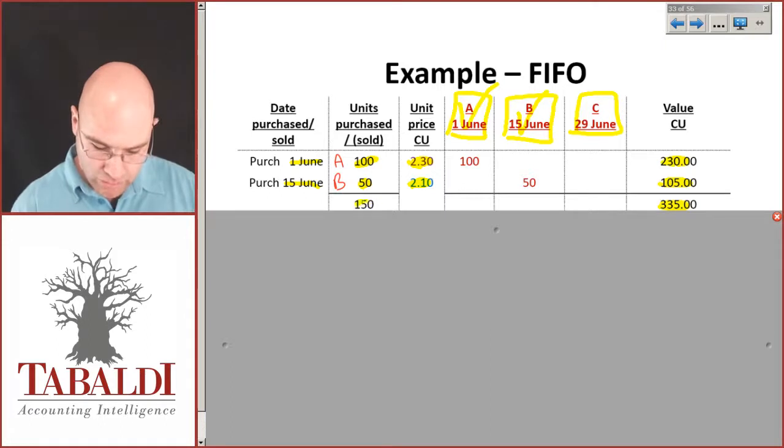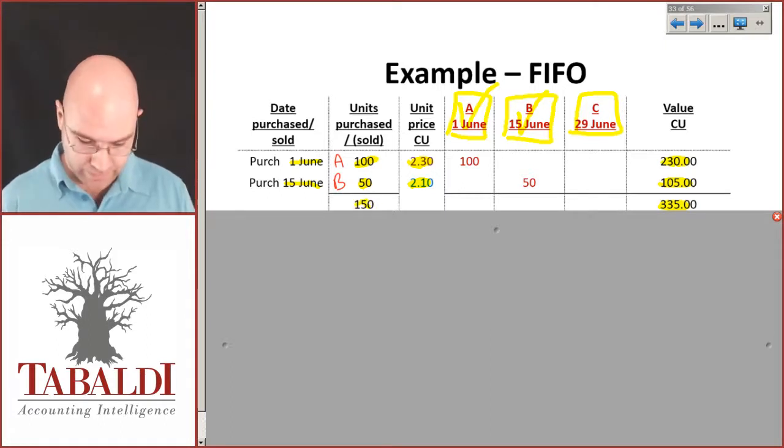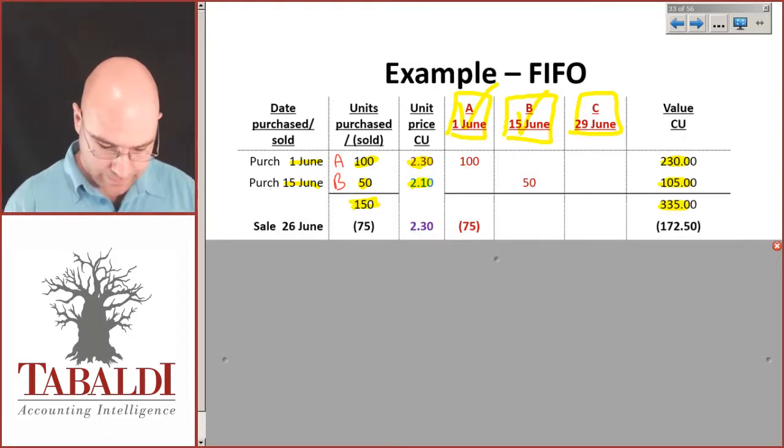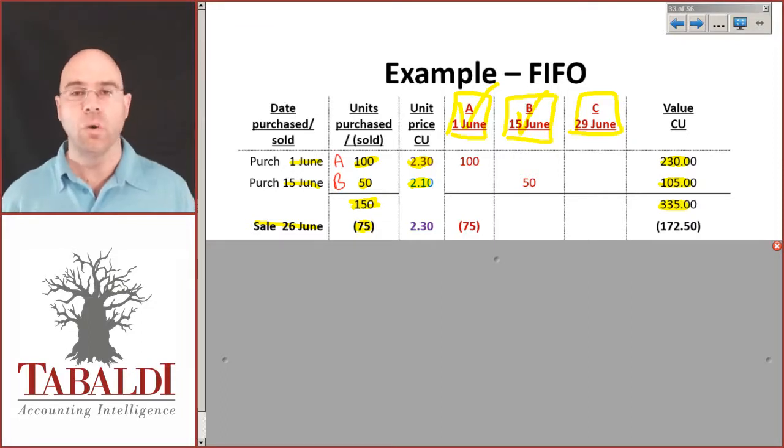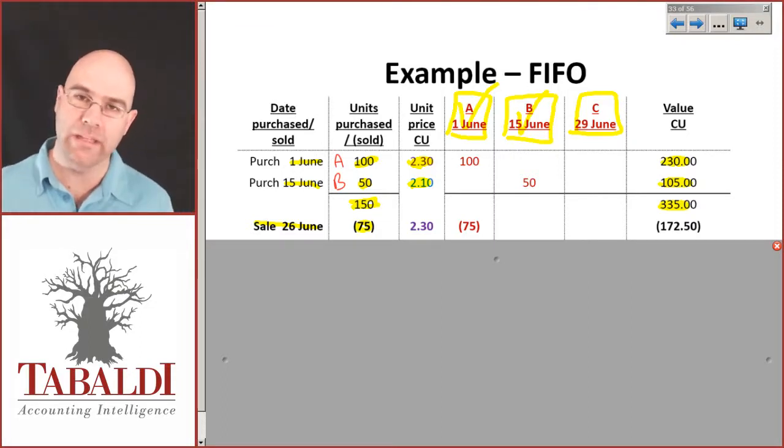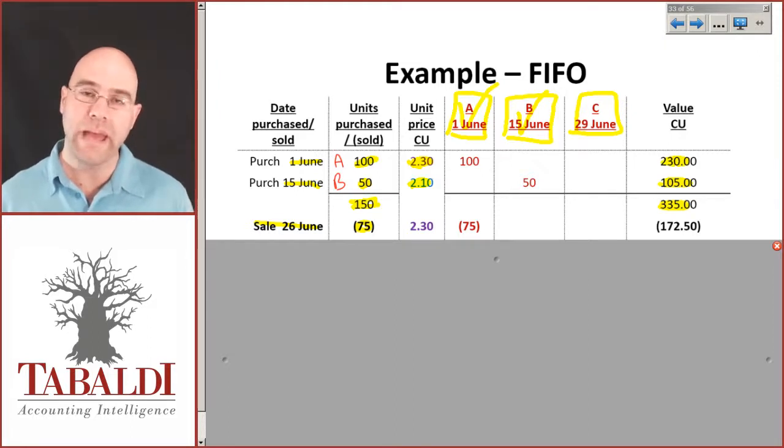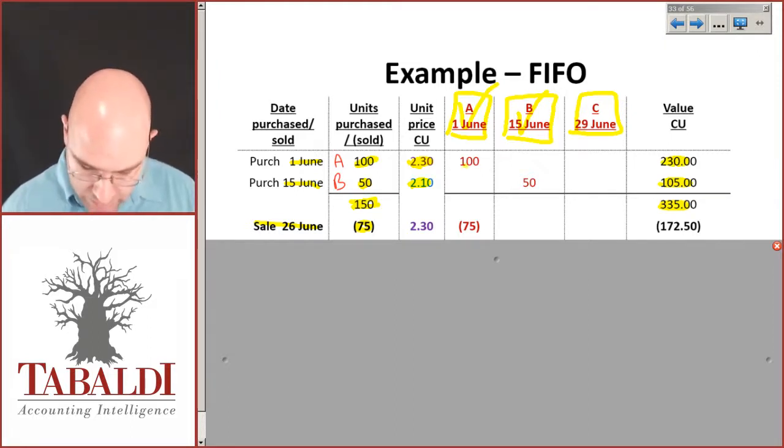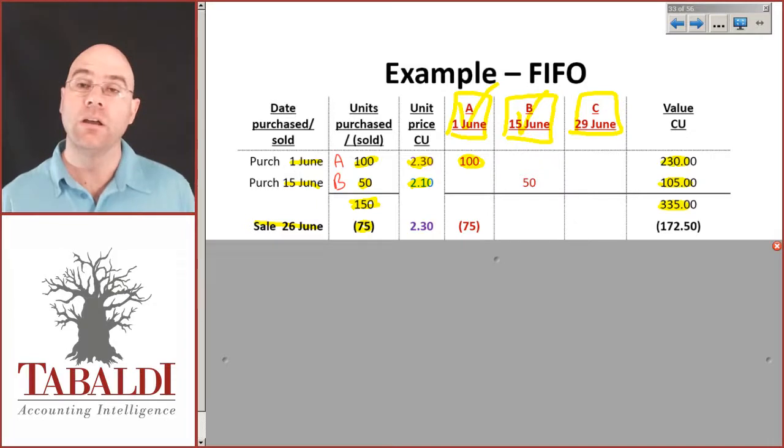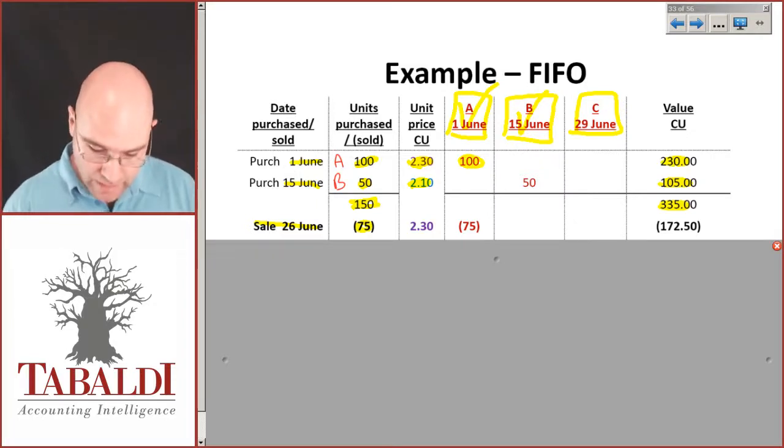Now we're going to deal with a sale, and the sale on the 26th of June is for 75 items. What price do I de-recognize inventory and raise cost of sales? Well, I need to go back and look at the first purchase. So the first purchase was 100 units at 2.3, so now I'm selling 75.